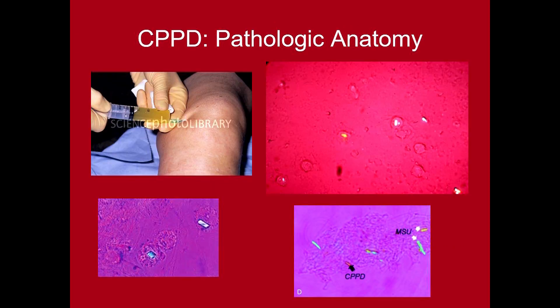Regarding pathologic anatomy, especially with pseudogout, patients will have a highly inflamed synovial effusion, and when the fluid is examined with a polarized light microscope, calcium pyrophosphate crystals can be seen. These are rhomboid and weakly birefringent crystals. They're blue when parallel to the plane of the polarizer and yellow when perpendicular, which is different than gout crystals.